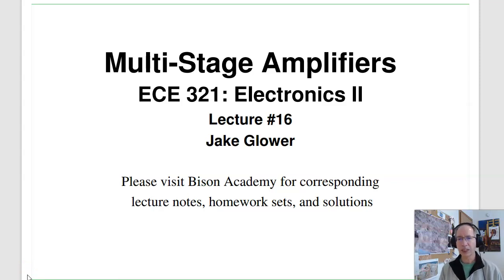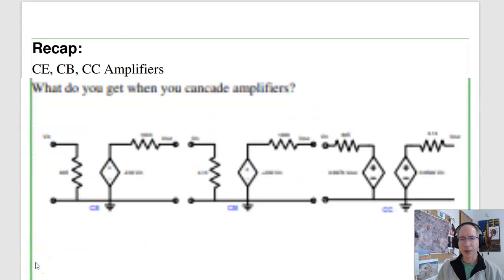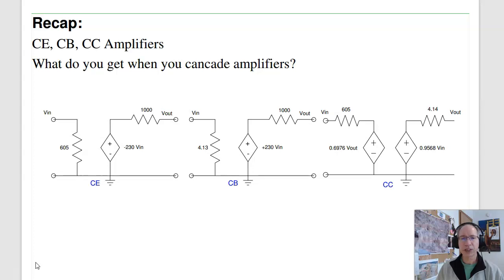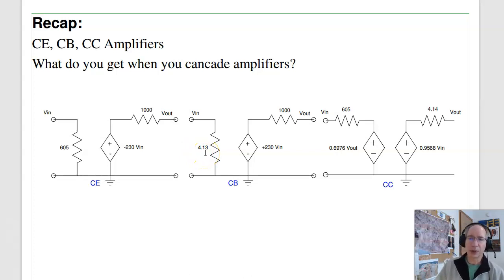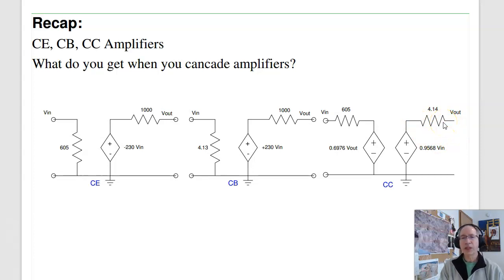Welcome to lecture number 16 for ECE 321 analog electronics. This lecture we're going to look at multi-stage amplifiers. As a recap, the previous lectures looked at the common emitter, common base, and common collector amplifier. The common emitter had a high input impedance, a high gain, and a fairly high output impedance. Common base had a low input impedance — useful if you want to drive a phonograph. The common collector has a low output impedance. That's for each stage.